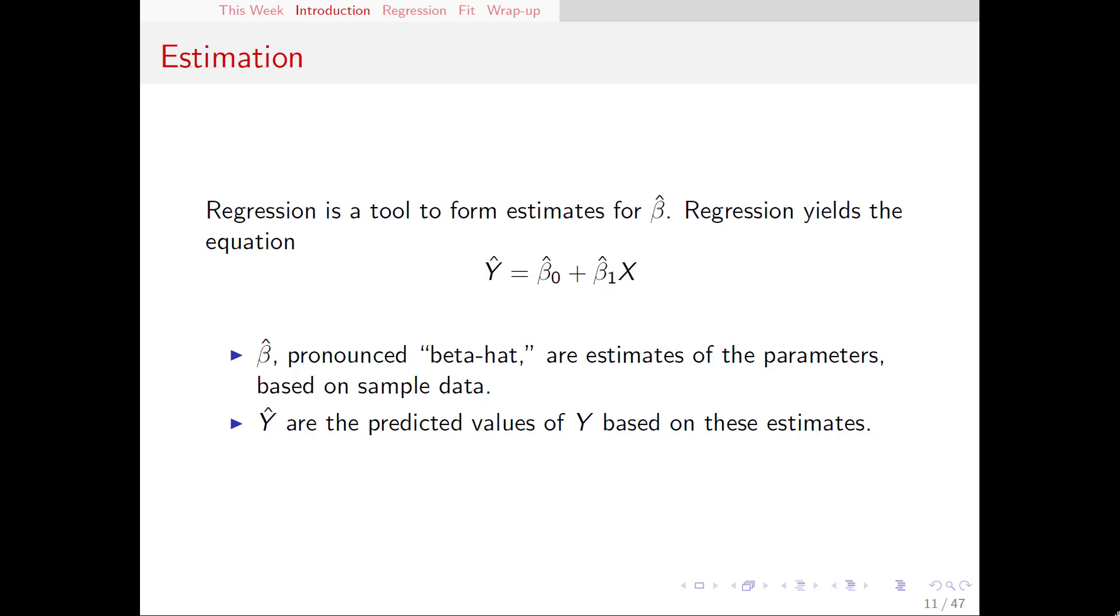Once we have those, and we'll talk about exactly how we get to those in a minute, we can put those into our equation and that's going to yield some predicted values that we call y hat. The y hats are not the same as the actual observed values of y in the sample, but they are what we would guess based on our estimates, our beta hats, and our values of explanatory variables, our x's.